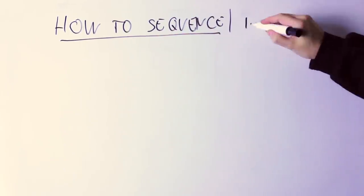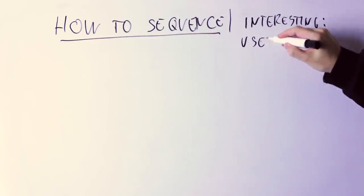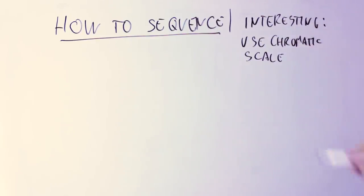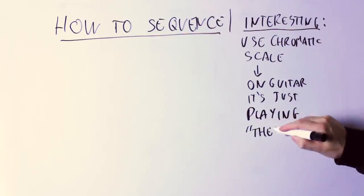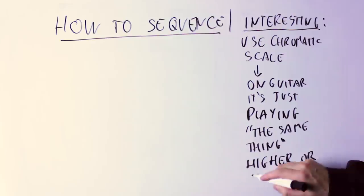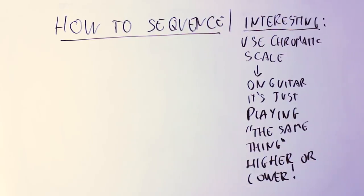A very interesting thing happens if you are sequencing a phrase over the chromatic scale. In this case, if you are doing this on the guitar, the phrase is simply moving up and down one fret at a time and you are not changing anything, so you are playing the exact same thing up and down the fretboard.